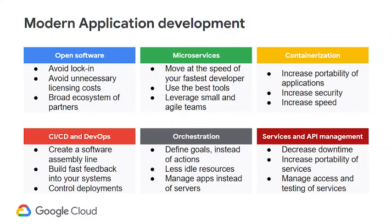These are some key principles of modern application development — six key areas that constitute it. First is open-source software, where we all know the benefits. Second is microservices, which is a general paradigm where instead of building large monolithic applications, you abstract out smaller services. The result is it allows smaller teams to work with specific tool sets they are well suited to, improving agility and overall software quality if they can focus on key services only.